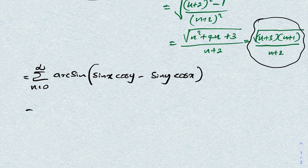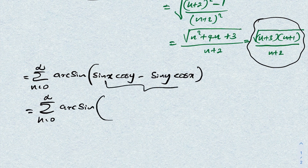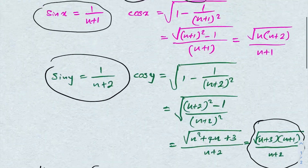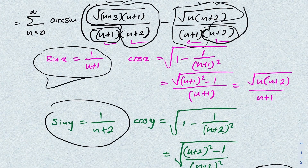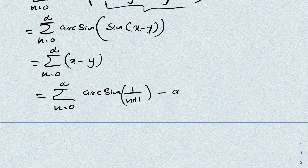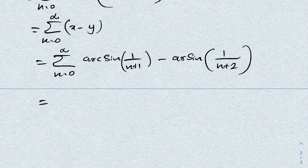So our sum becomes the sum from n=0 to infinity of arcsin(sin(x - y)), and since arcsin and sin cancel, we have the sum from n=0 to infinity of (x - y). Since x = arcsin(1/(n+1)) and y = arcsin(1/(n+2)), this is the telescoping series: sum from n=0 to infinity of arcsin(1/(n+1)) - arcsin(1/(n+2)).